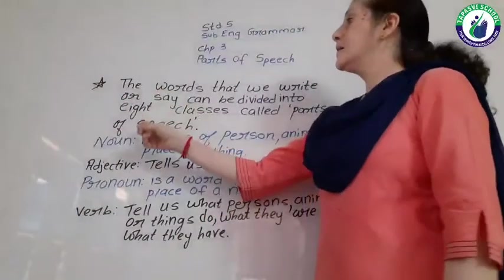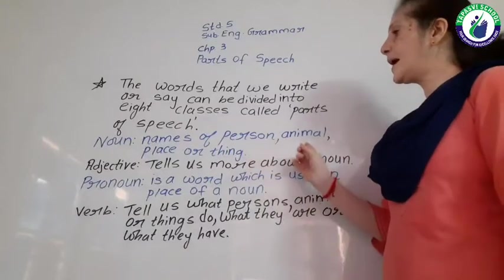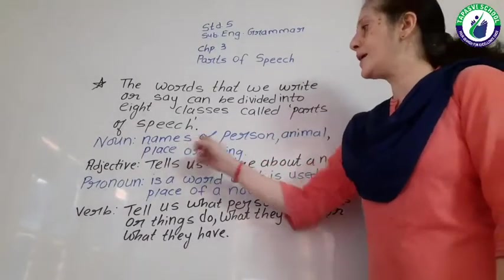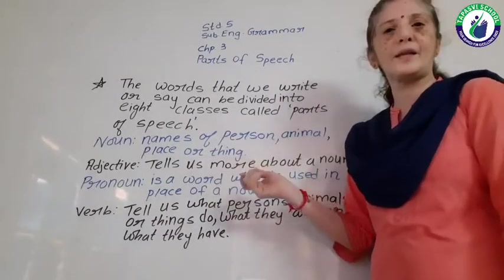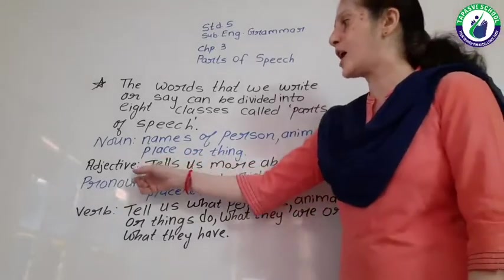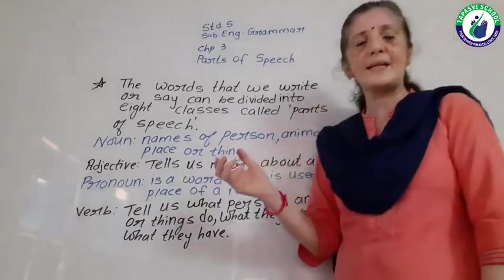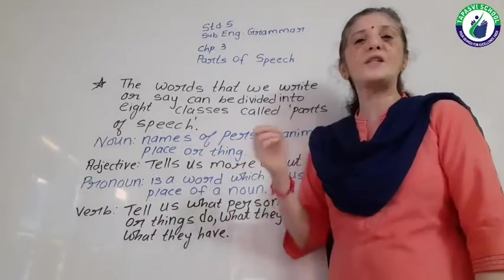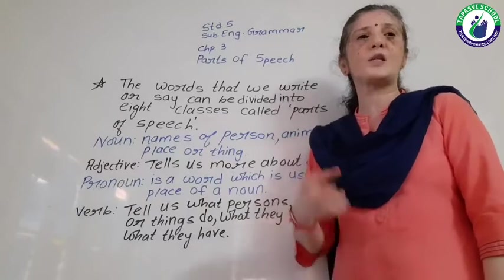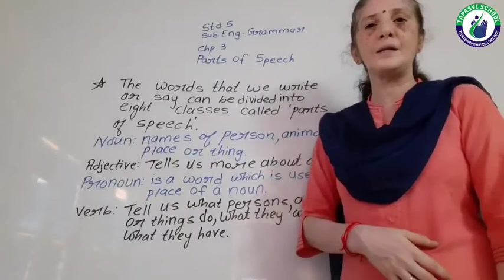Let's review. Noun — the names of persons, animals, places or things, and it suggests ideas and feelings. Adjective — it tells us more about a noun, it adds something and describes the noun. It shows its quality, quantity, number, etc., and it points out the noun.